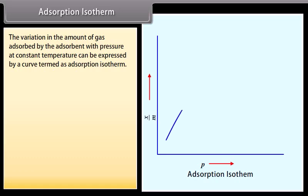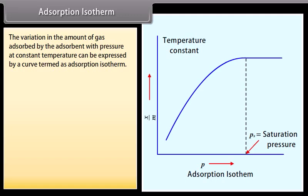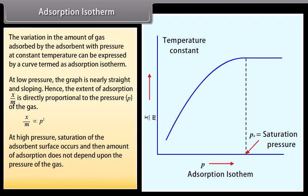The adsorption isotherm expresses the variation in the amount of gas adsorbed by the adsorbent with pressure at constant temperature. At low pressure, the graph is nearly straight and sloping, so the extent of adsorption x/m is directly proportional to the pressure of the gas. At high pressure, saturation of the adsorbent surface occurs and the amount of adsorption does not depend upon the pressure; this is expressed as x/m ∝ p⁰.